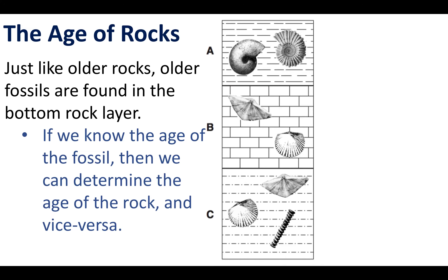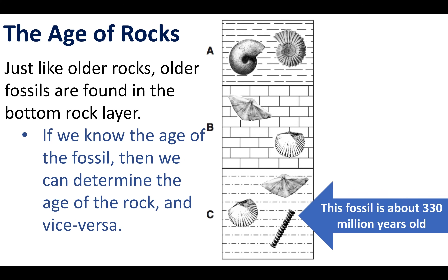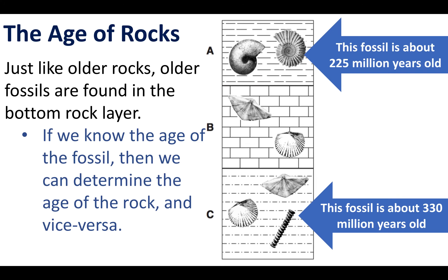If we know the age of the rock we can also determine the age of the fossil if the fossil is within a specific rock layer. Looking at rock layer C near the bottom, the fossil being pointed to is about 330 million years old, so we can conclude that rock layer C is also approximately 330 million years old. Similarly, near the top, the fossil in rock layer A is about 225 million years old, so rock layer A is also about 225 million years old.